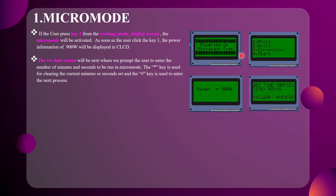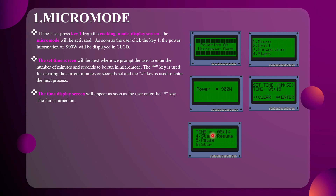Next, the set time screen appears. In the set time screen, we enter the number of minutes and seconds to run in Micro mode. If we press star, it clears those values. If we press hash, it enters the next process, which is the time display screen, where whatever values we set will be decremented as the timer counts down.